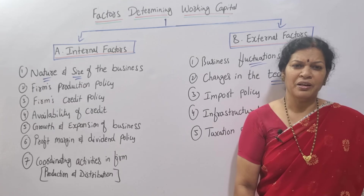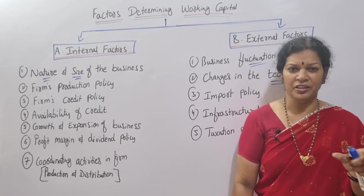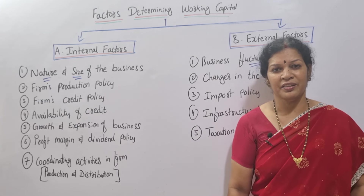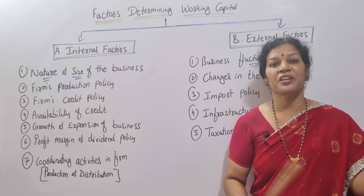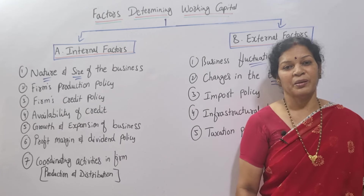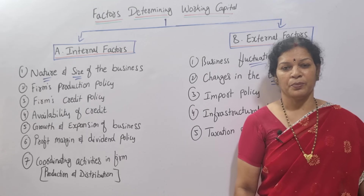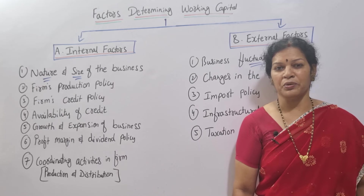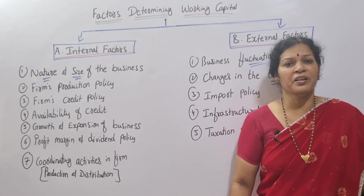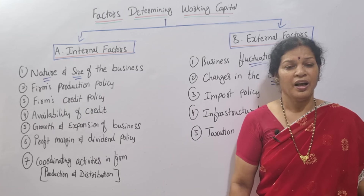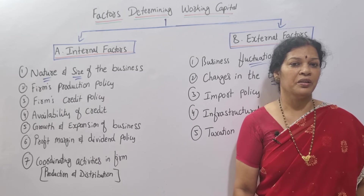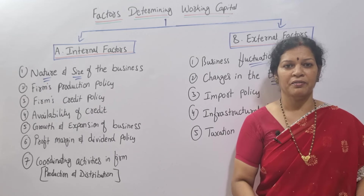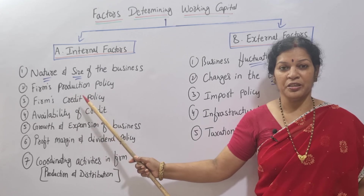The third internal factor is the firm's credit policy. If you sell a lot of products on credit, then you have various debtors. When goods are sold on a credit basis, money is blocked in those debtors. If you are doing cash sales, you can recycle and work it out quickly. That is the credit policy.